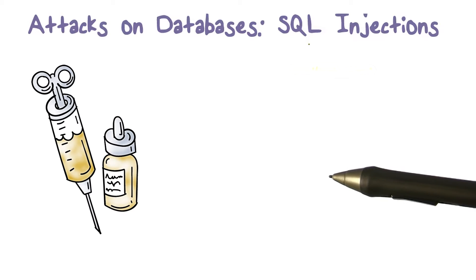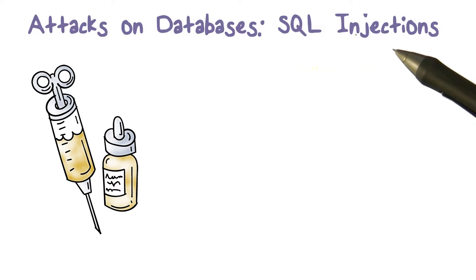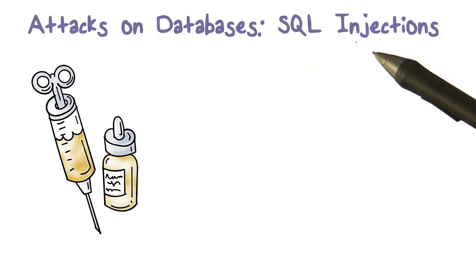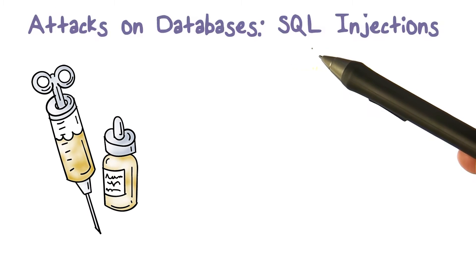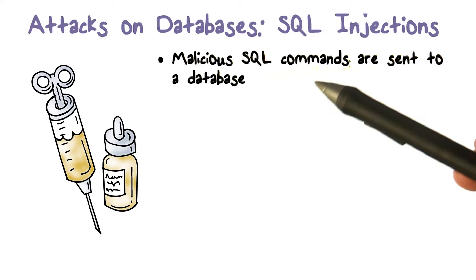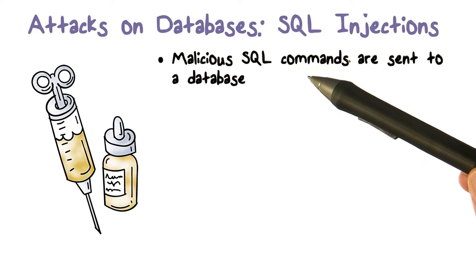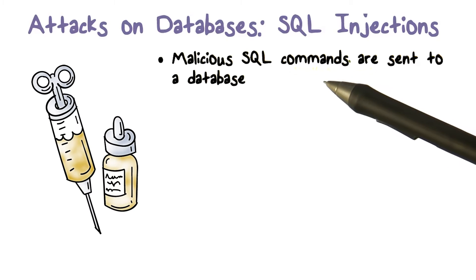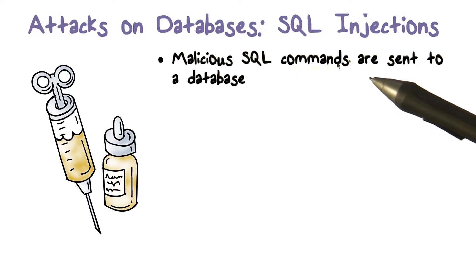We're going to talk about a couple of different possible attacks. The first one is what is called injection — SQL injection. These are essentially someone exploiting vulnerabilities in the code that makes up the query submitted to a database. When the query is written in SQL, the attack is called SQL injection. An SQL injection is a malicious command presented to the database, so the database is actually going to run it — malicious because it allows someone to do something they're not authorized to do.